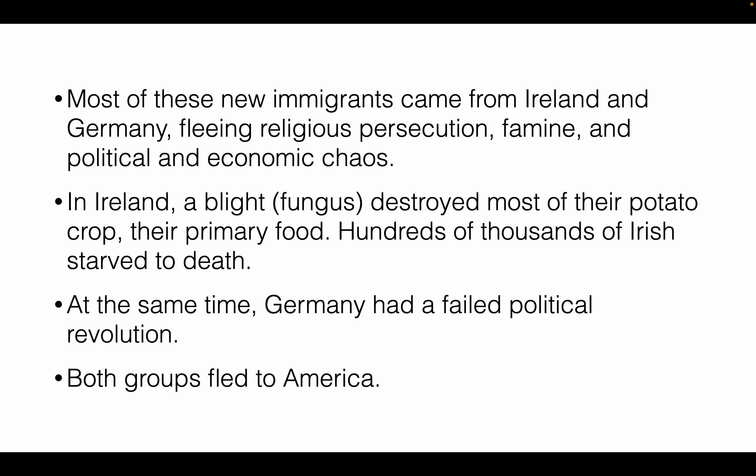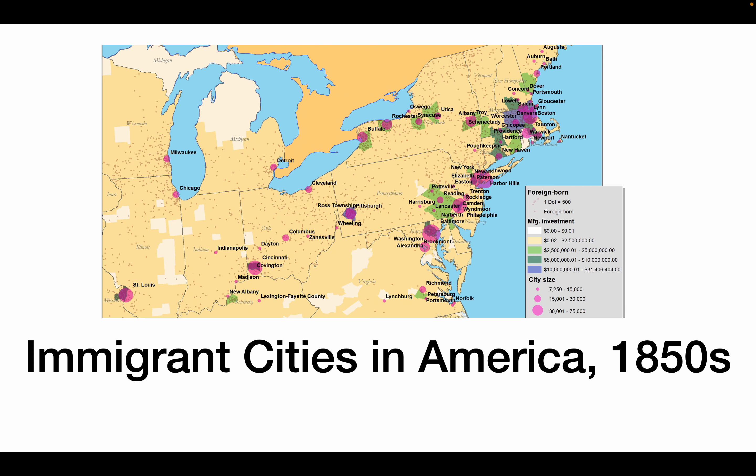In Ireland, the potato famine — a fungus that destroyed most of their food — caused hundreds of thousands, perhaps even a million Irish people, to starve to death. After this happened, many Irish people fled to America. At about the same time, Germany was having a huge failed political revolution, and so both groups came to America.